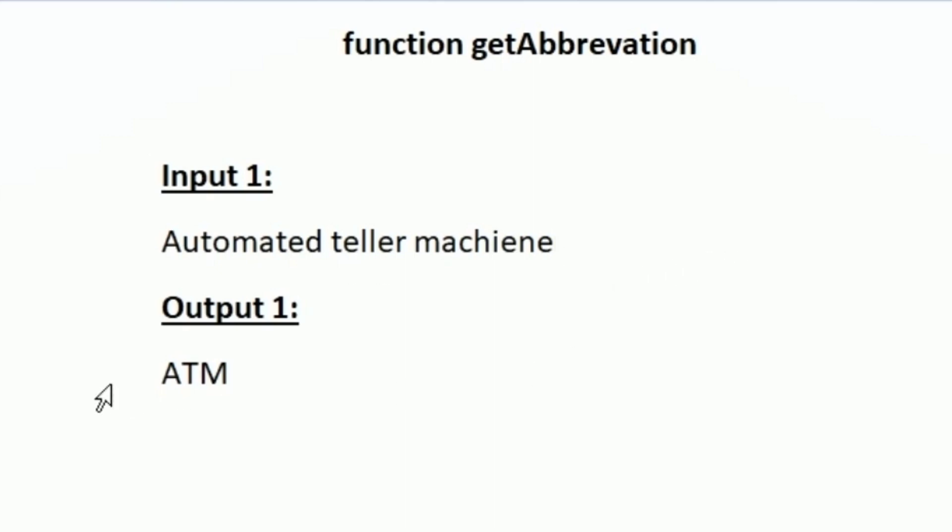Here our input string is 'automated teller machine' so the abbreviation is ATM. The abbreviation is nothing but the first character from each and every word of the given input string. The first word is automated and the first character is A, so we have to take this character A.